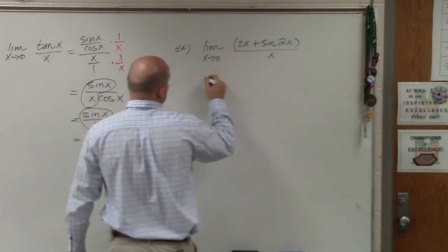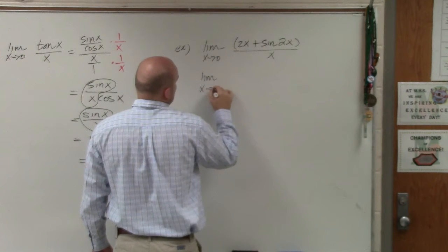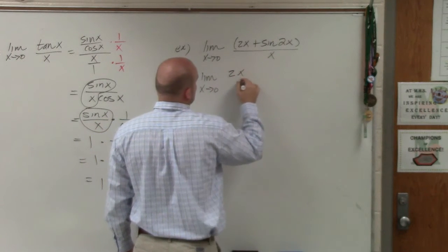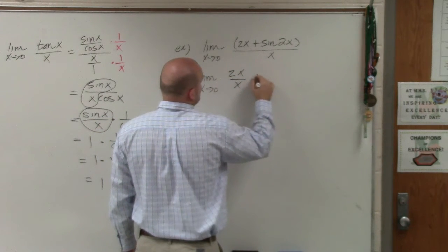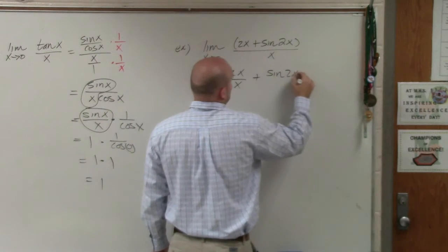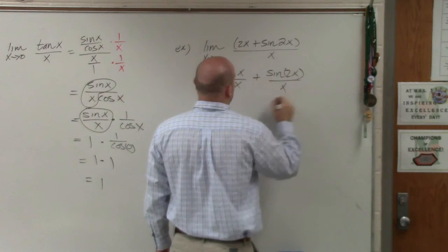So I can rewrite this as the limit as x approaches 0 of 2x over x plus the sine of 2x over x.